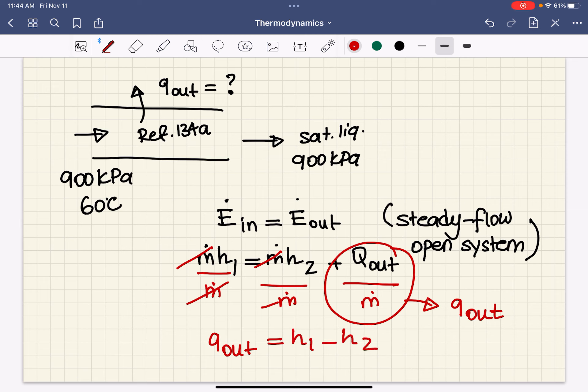So all we have to do is find enthalpies at the inlet and at the exit to figure out what is the heat interaction per unit mass. And looking at this, inlet and exit conditions are clearly stated, so it should not be difficult for us to calculate and figure out what are the enthalpies. Remembering this is a refrigerant, so we need to look at refrigerant tables.